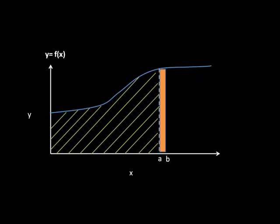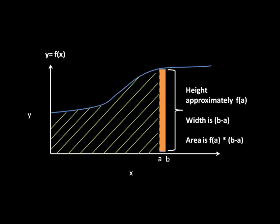the area under the curve increased by the area of the shaded region, whose height is approximately f of a and width is b minus a. I say the height is approximately f of a because the height is in fact not constant and is different at b than at a.